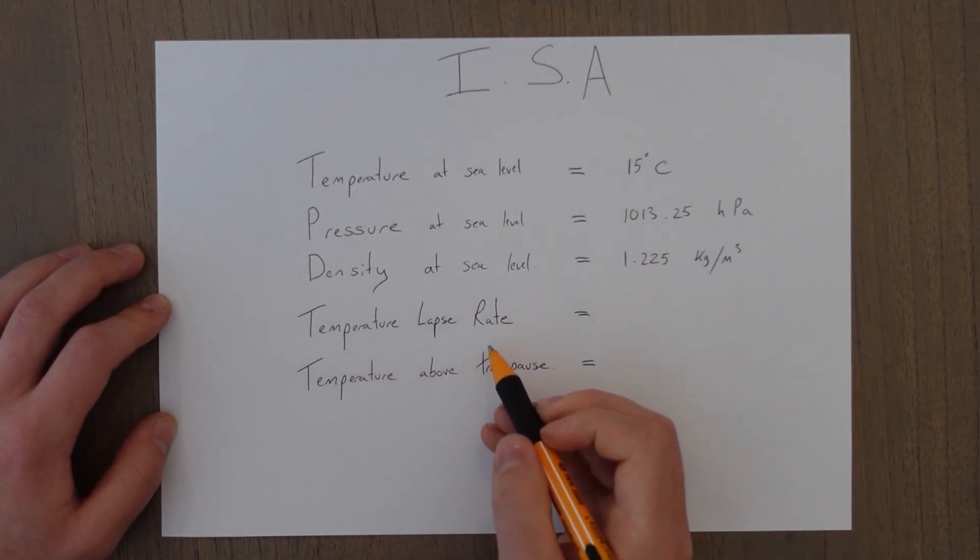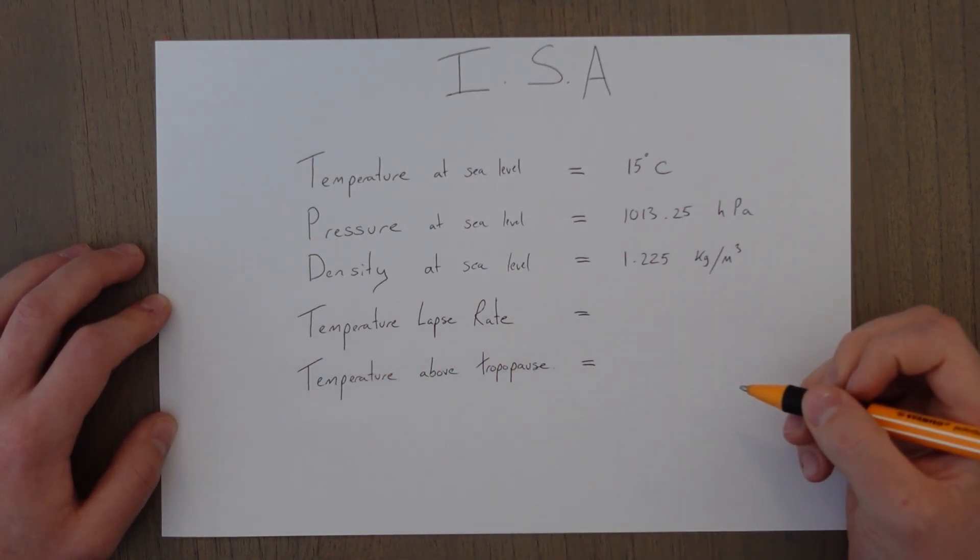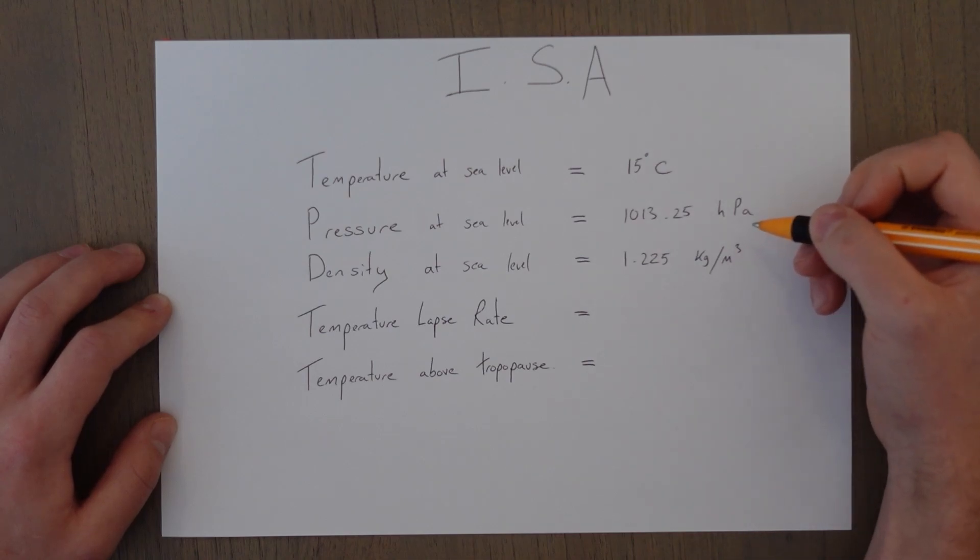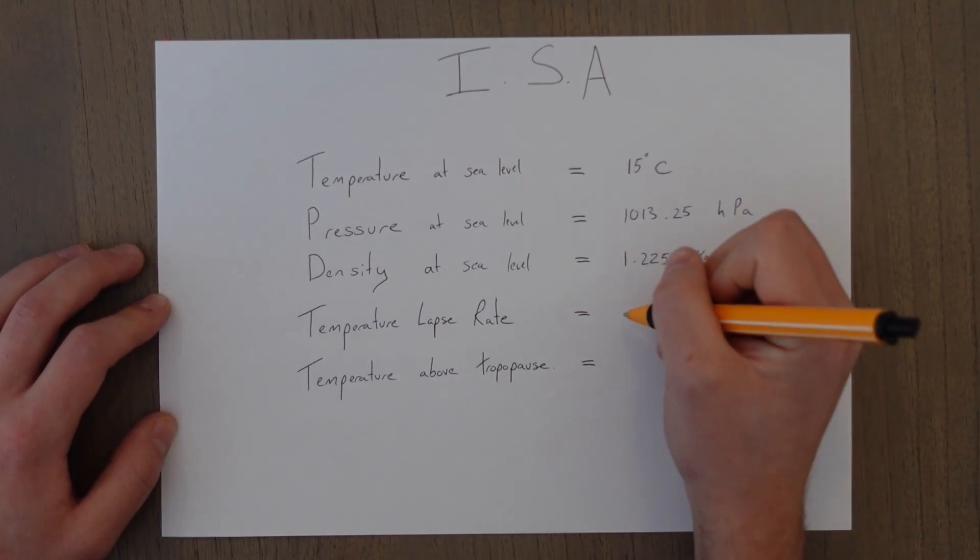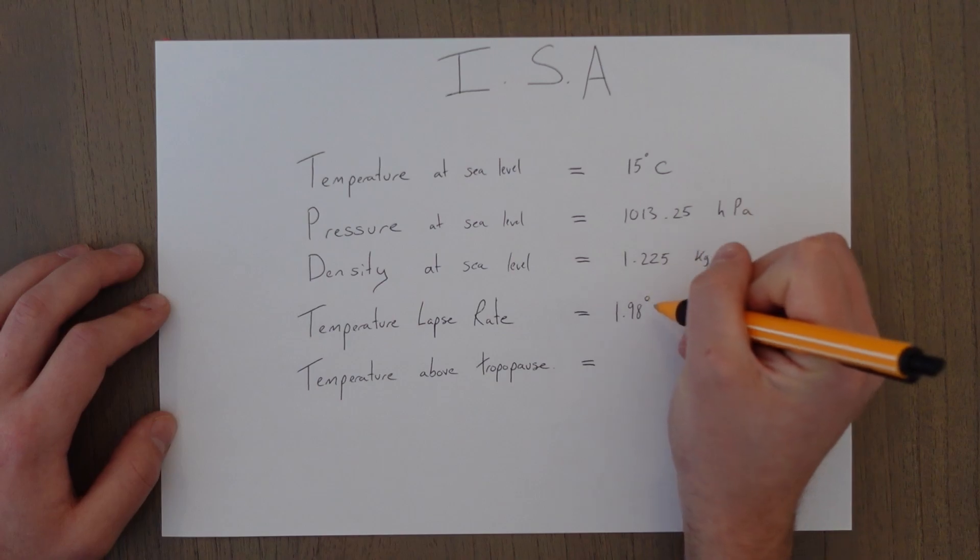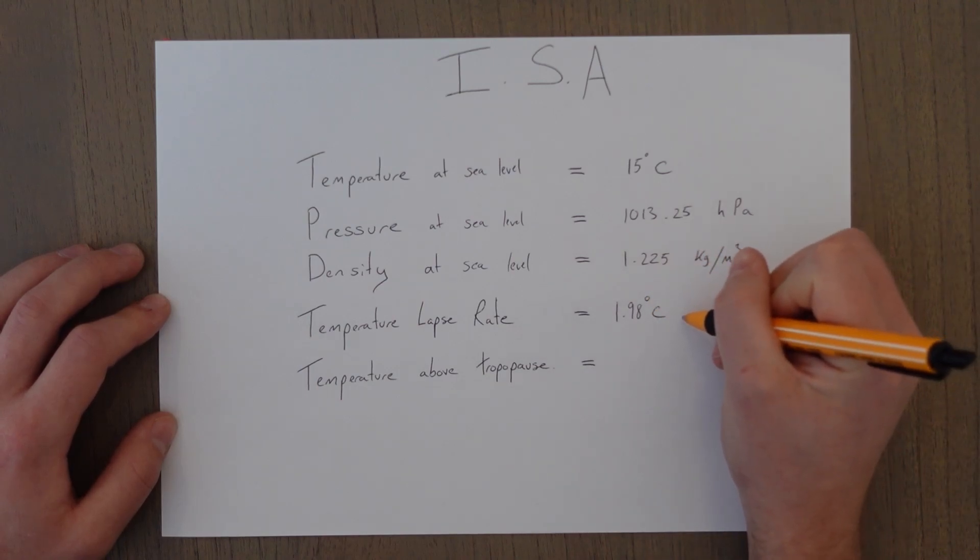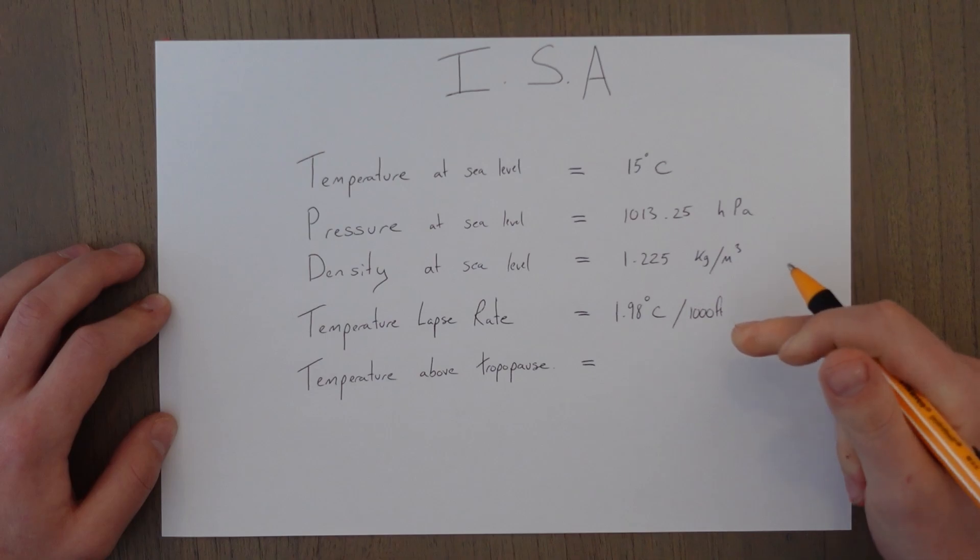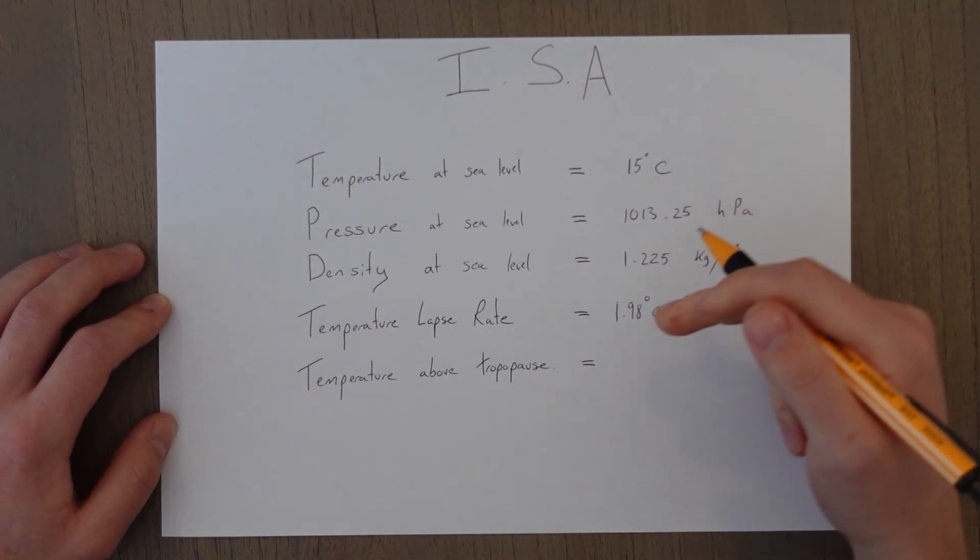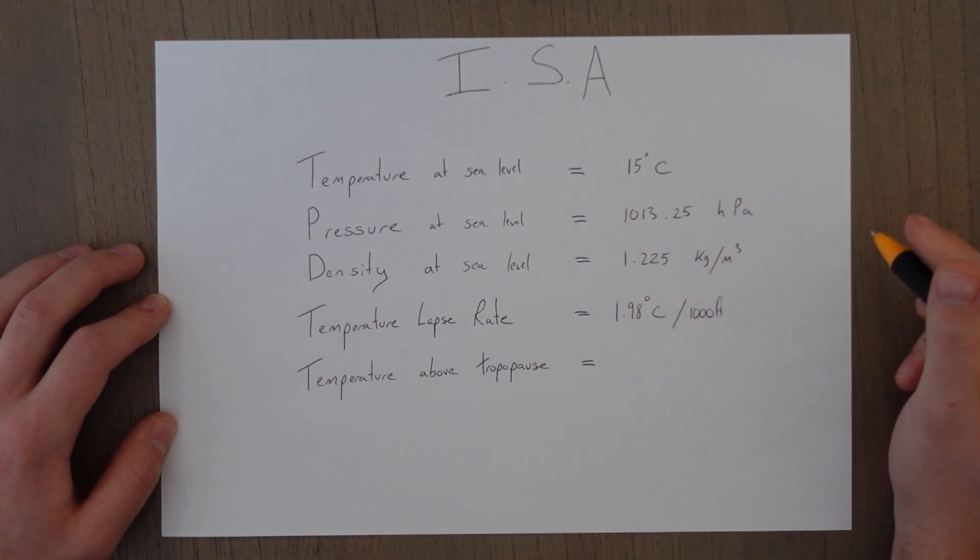Temperature lapse rate. This is basically how much the temperature reduces as we increase in altitude. So that's considered to be 1.98 degrees Celsius every 1000 feet. So every 1000 feet we go up, the temperature drops by 1.98 degrees Celsius.